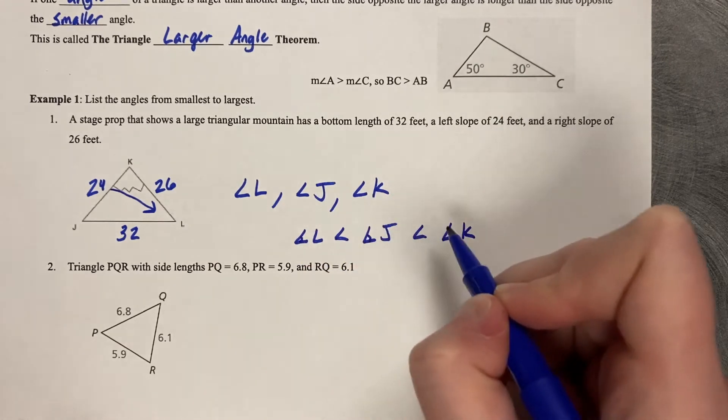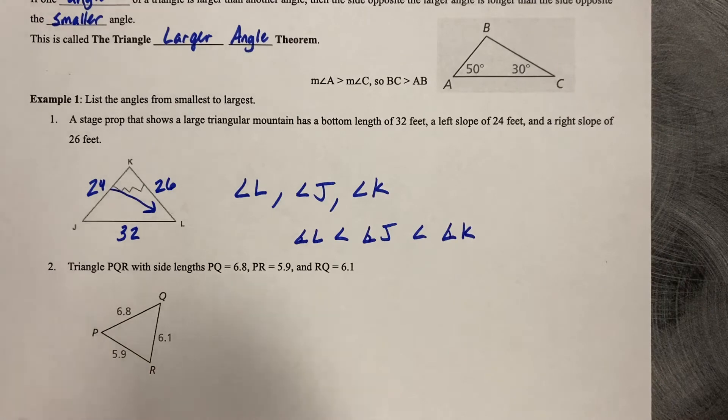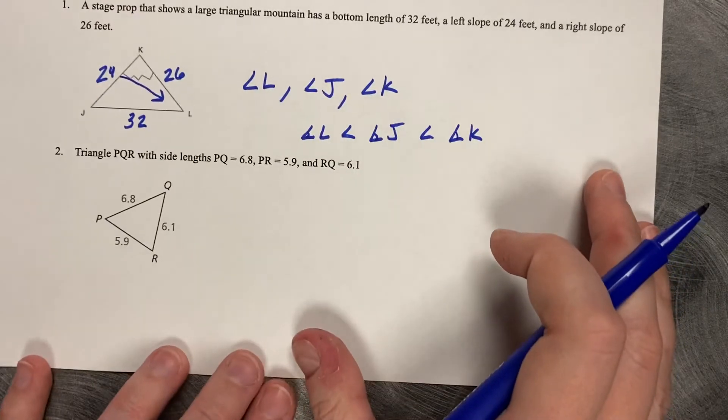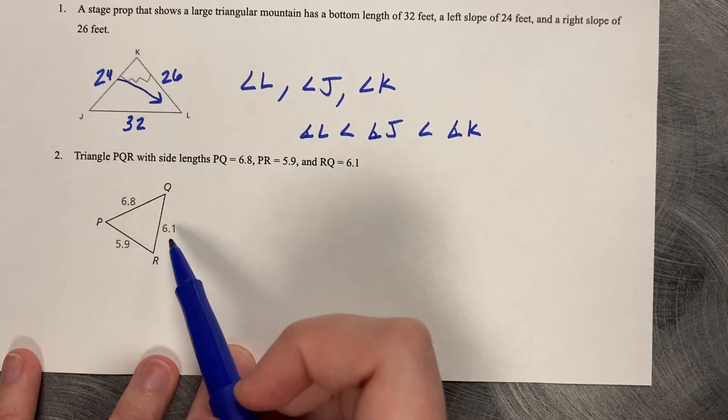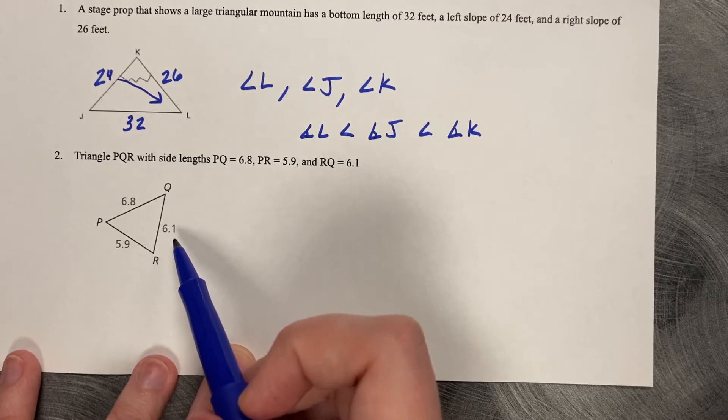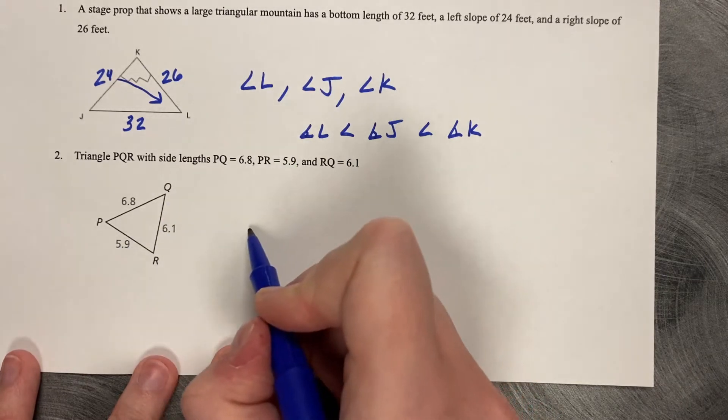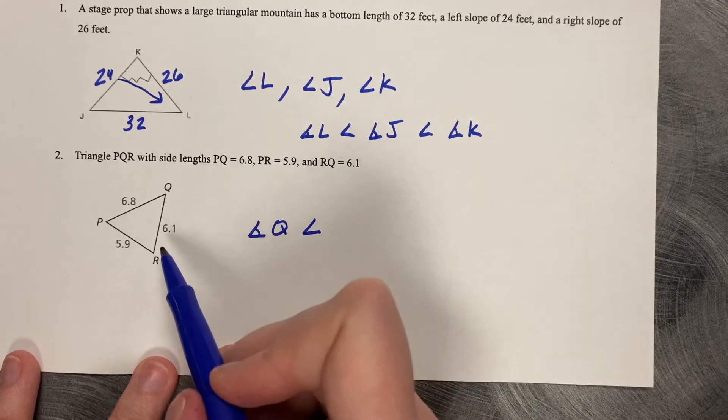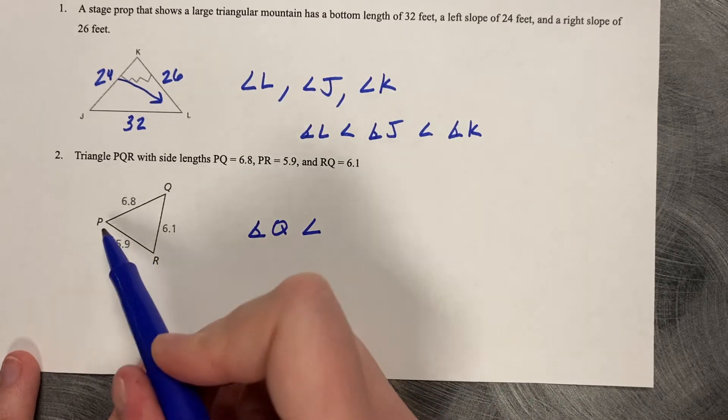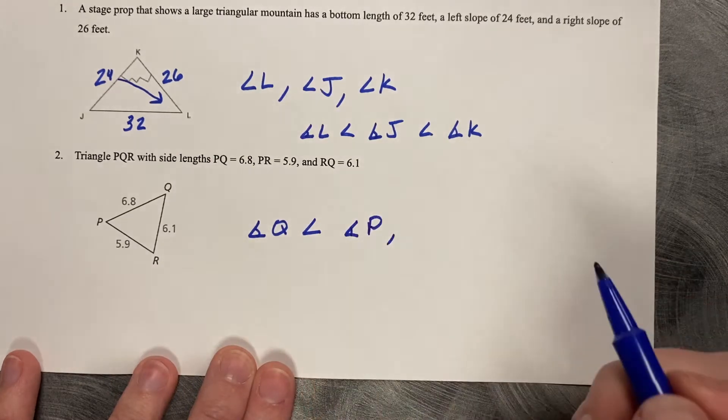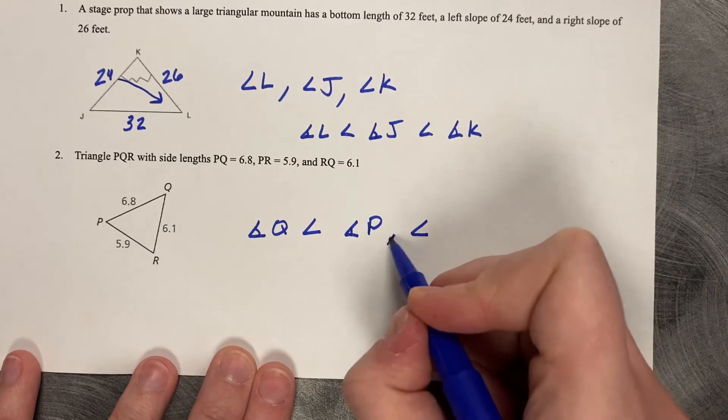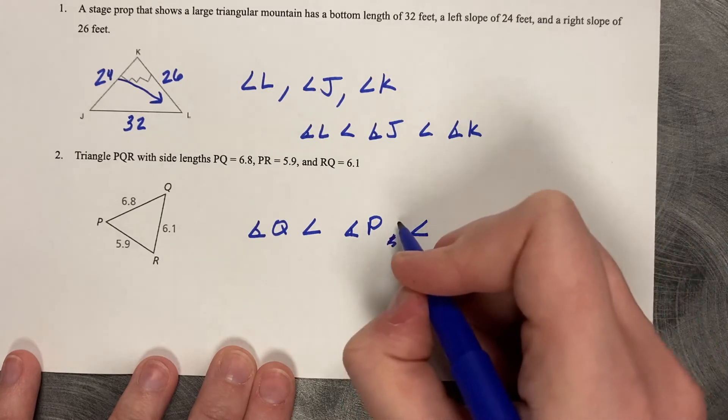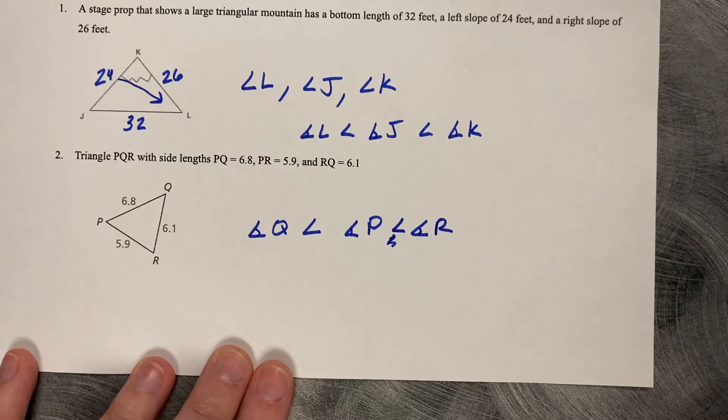So we can say angle L is less than angle J is less than angle K. And I'm going to put little angle symbols on those to keep them separate from the less than symbols. Triangle PQR with side lengths PQ is 6.8, 5.9, and 6.1, respectively. And we're trying to list the angles from smallest to largest. So again, look for the smallest side. 5.9 is opposite of angle Q, is less than our next smallest angle, which is 6.1 is opposite of angle P. And finally, our longest side is 6.8, opposite of angle R. That should be just a less than. Less than angle R. QPR.